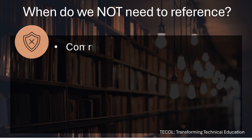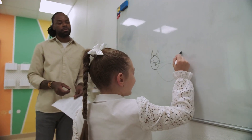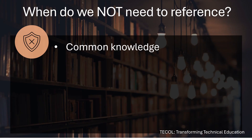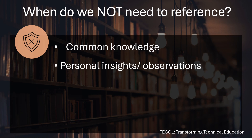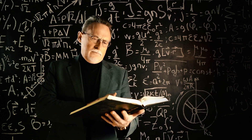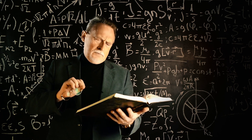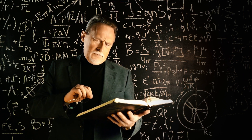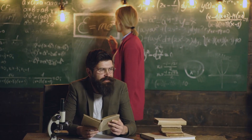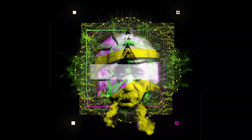There are also instances where we don't need to reference. First is common knowledge — the sky is blue, humans generally have a head, ten fingers and ten toes; we don't need sources for that. If you are giving your own personal opinion, insights, or observations, you don't need to reference your own ideas. Any well-established theories within your field also don't need to be referenced — for example, in science and mathematics you don't need to reference Pythagoras' theorem because it's a well-established concept that everyone in the field knows.